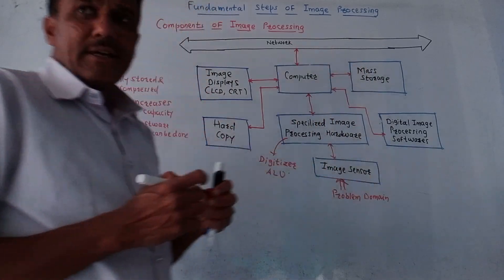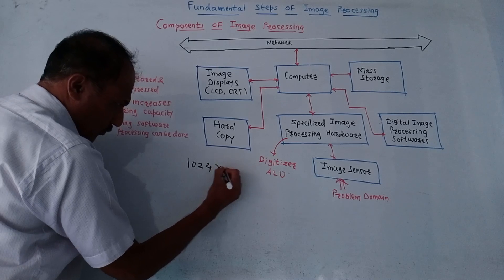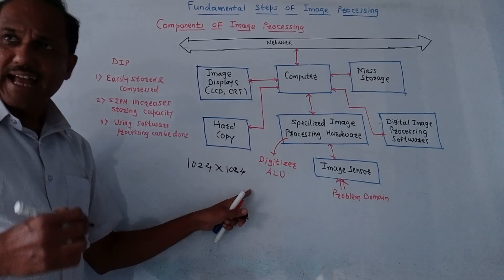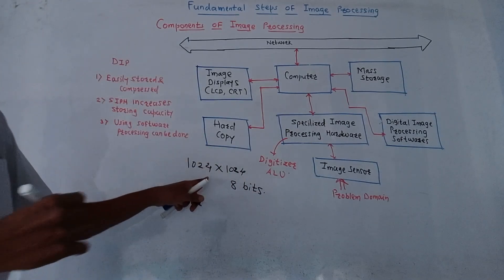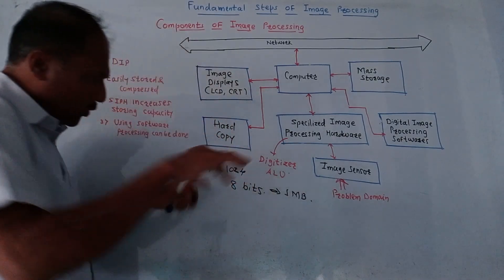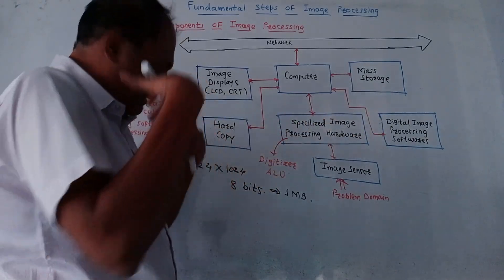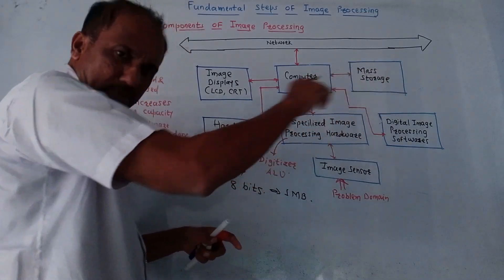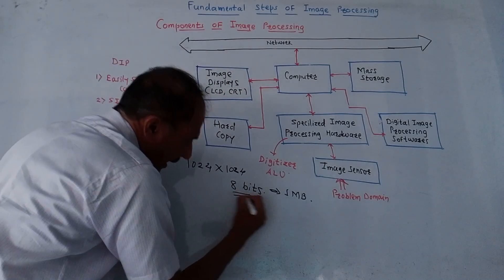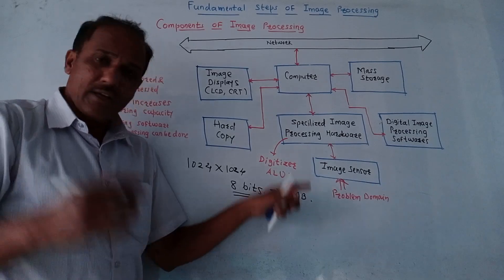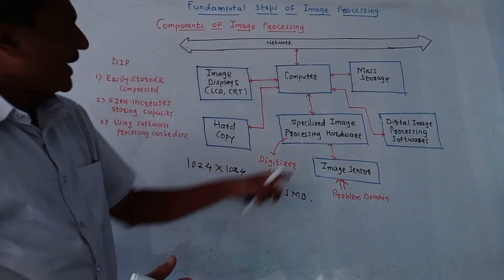Next is mass storage, which is a very important part. For example, if you have an image of size 1024 by 1024 pixels and each pixel is represented using 8 bits, then approximately one megabyte of memory is required to store that image. Since there can be many such images, a large amount of memory is needed. To reduce this storage burden, we use mass storage.